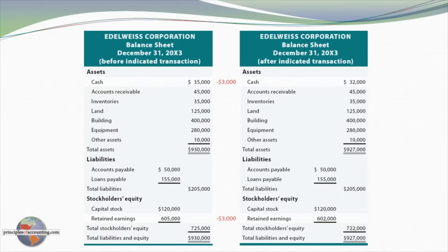So the retained earnings of the corporation, instead of being $605,000, is now only $602,000. But once again, the fundamental accounting equation after the indicated transaction: total assets, $927,000, still equaled total liabilities plus stockholder's equity.